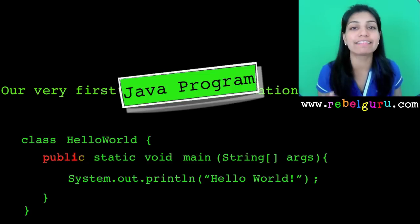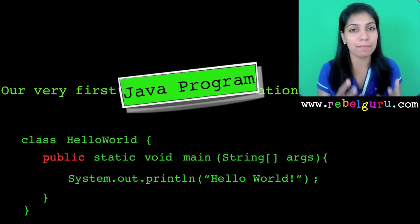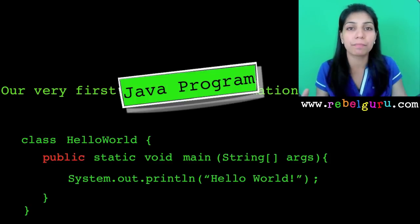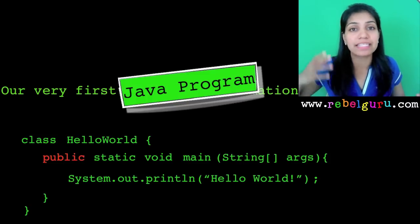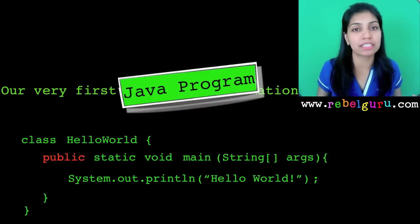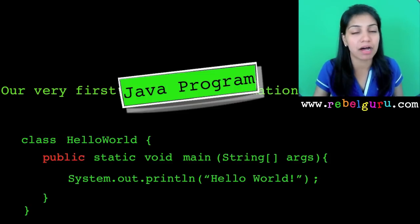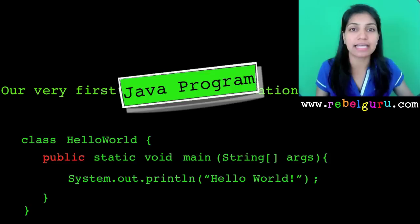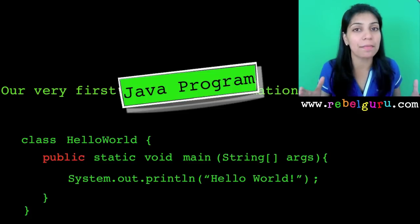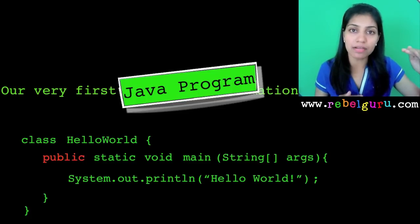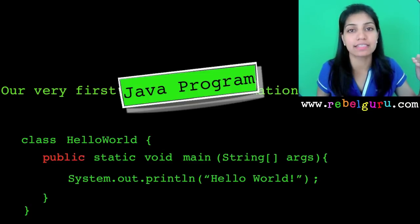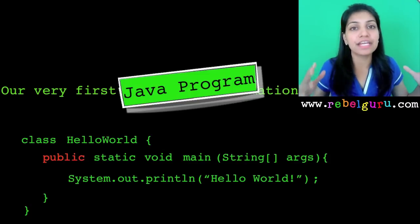The first adjective is the keyword 'public'. A class has members — data members and methods. In Java, functions are called methods. Classes can have data members like String name or int marks, and they can have methods like computeMarks. In this case, this class does not have any data members — it has only one method, which is main. There are rules on who can access a member of a class.